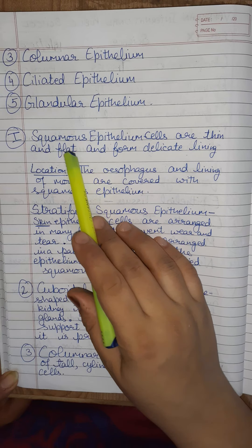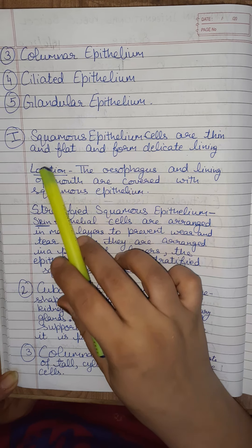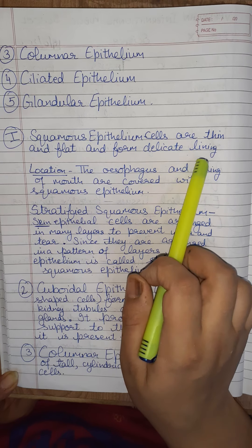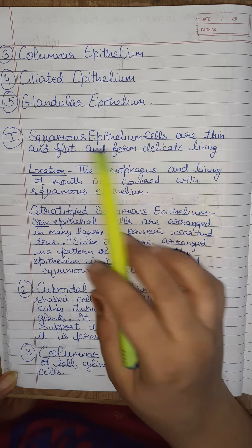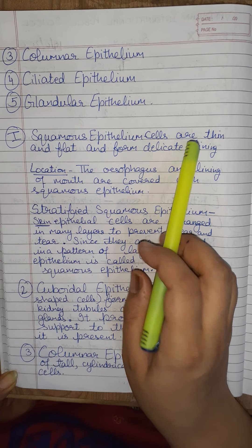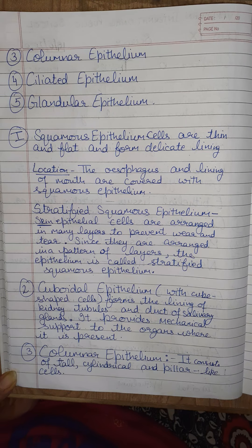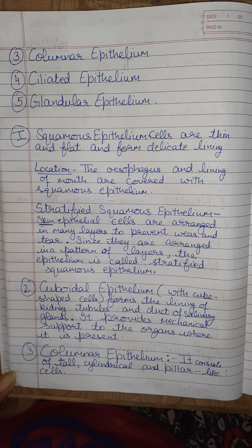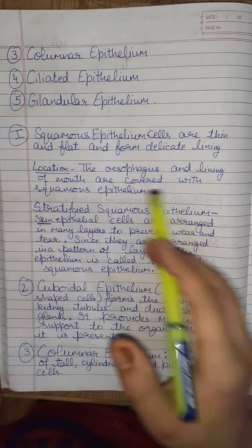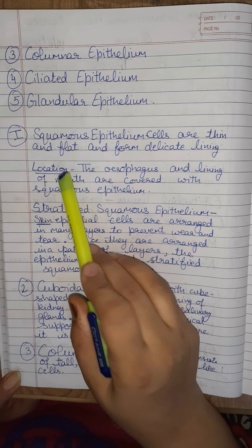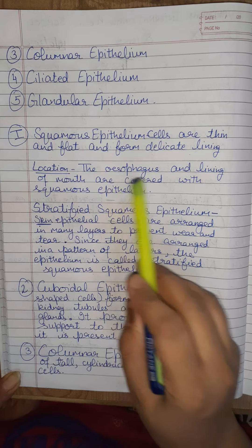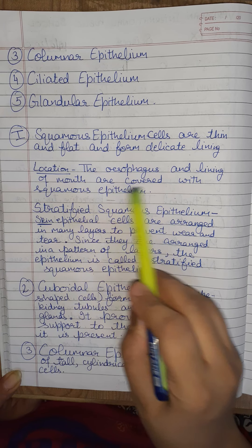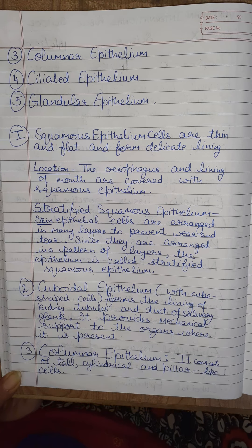Squamous epithelial cells are thin and flat and form a delicate lining — that means a very soft lining. The location of squamous epithelium: the esophagus and the lining of the mouth are covered with squamous epithelium.